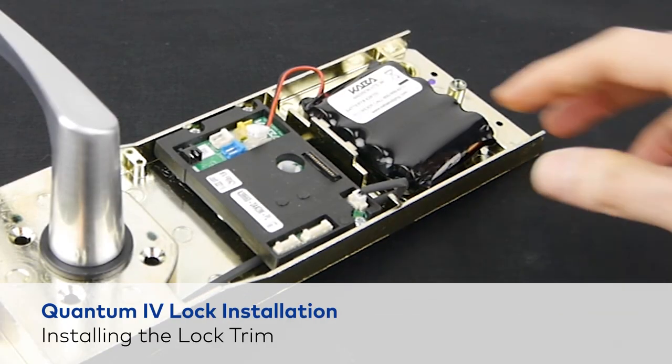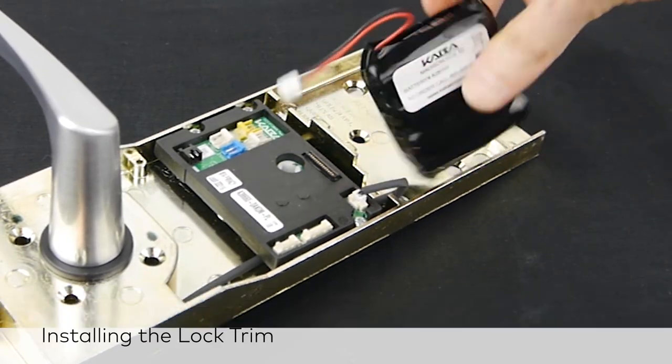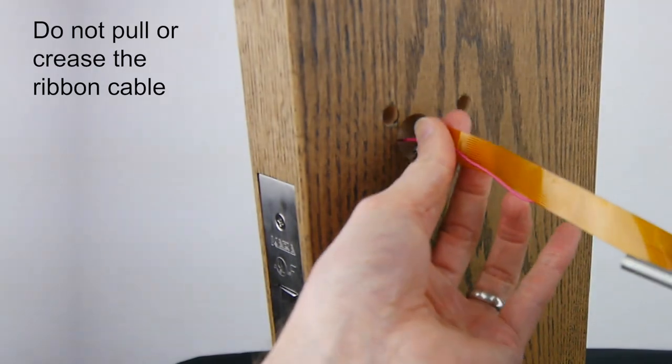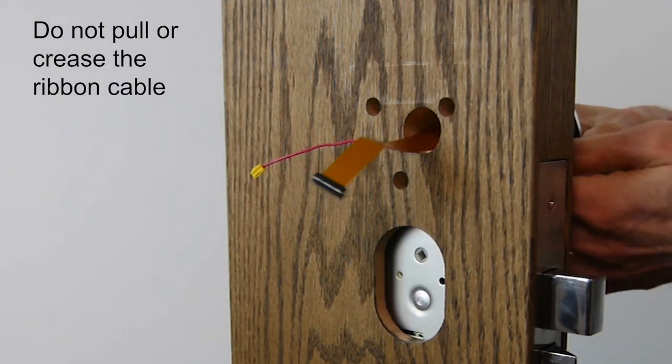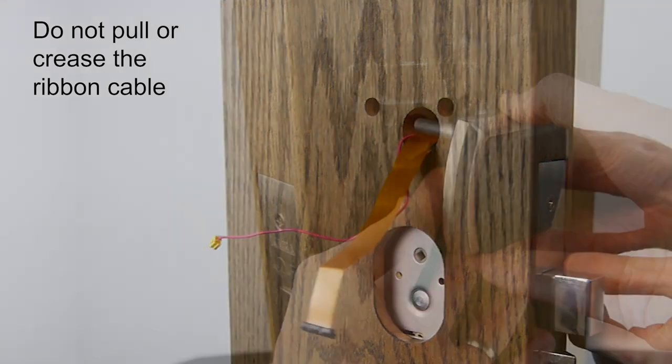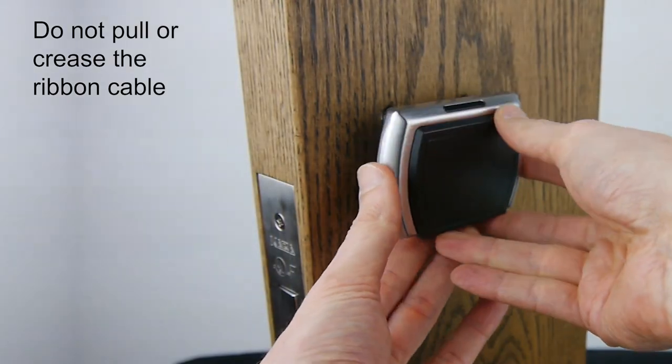To install the lock trim, first remove the battery pack. Position the reader assembly on the outside of the door and carefully route the ribbon cable and power cable through the door. Do not pull or crease the ribbon cable.